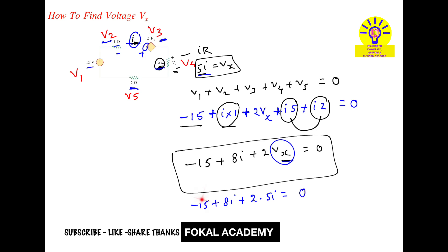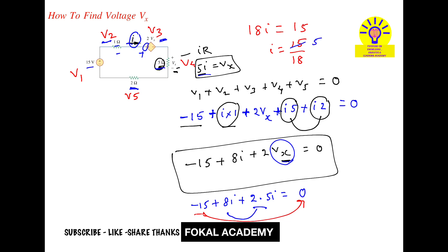Bringing minus 15 to the right-hand side and combining: 2 times 5I gives 10I, and 10I plus 8I gives 18I. So 18I equals 15, which means I equals 15 by 18, simplified to 5 by 6 amperes.